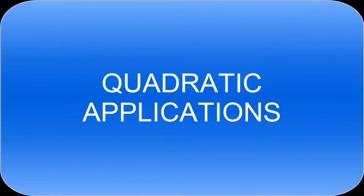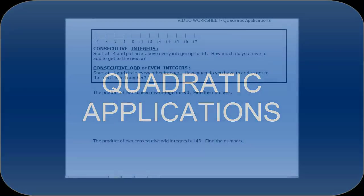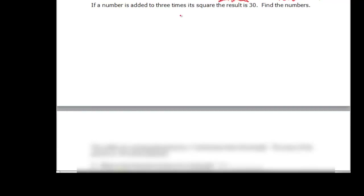In this video we'll talk about quadratic applications. If a number is added to three times its square, the result is thirty. So let's go through and see what we know and translate that.